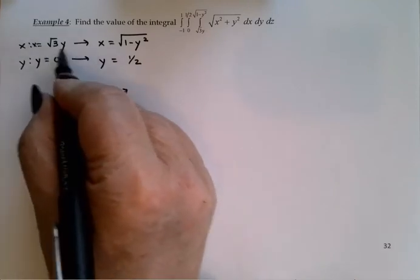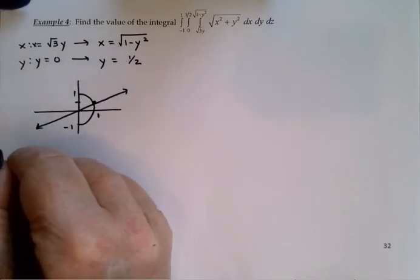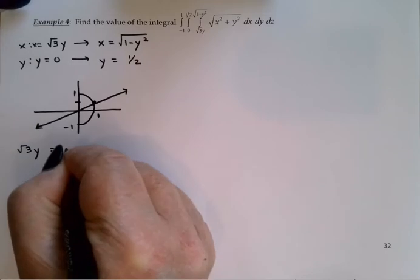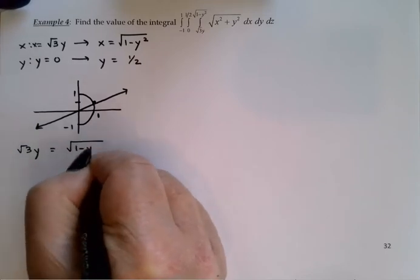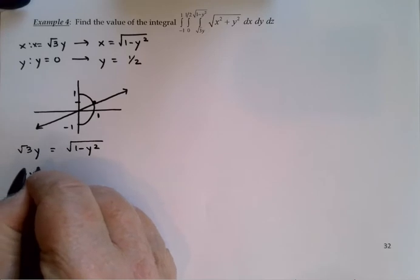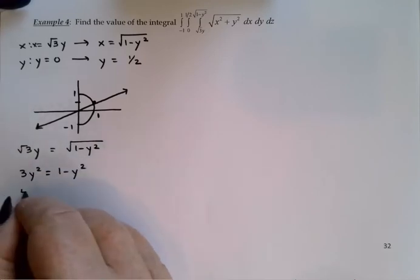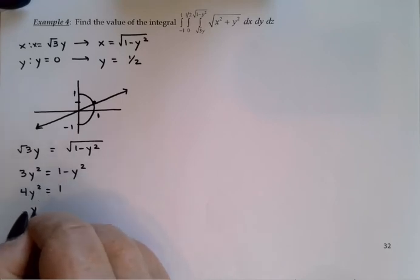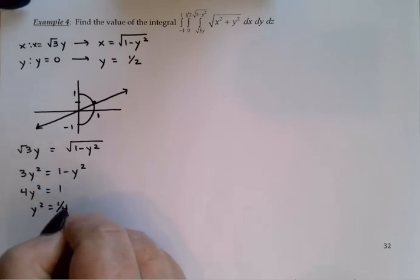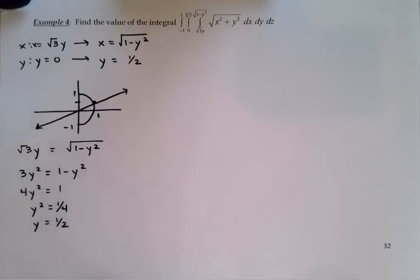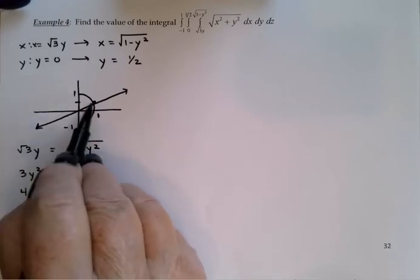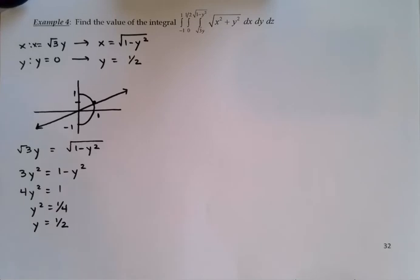We can find the intersection just by setting the x values equal to one another. Squaring both sides would give me 3y squared equals 1 minus y squared. So 4y squared is 1. And we can see that that does indeed give us y equal 1 half. I took the positive square root since it was clear that my intersection point had a positive y.